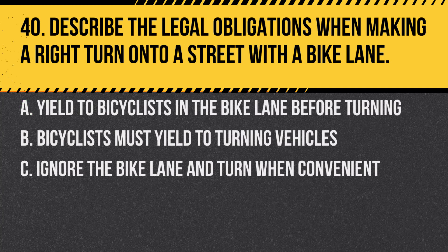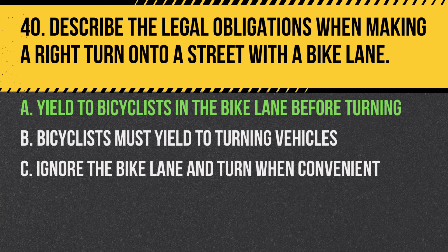Question 40. Describe the legal obligations when making a right turn onto a street with a bike lane. A. Yield to bicyclists in the bike lane before turning. B. Bicyclists must yield to turning vehicles. C. Ignore the bike lane and turn when convenient. Answer: A. Yield to bicyclists in the bike lane before turning. Drivers must ensure the bike lane is clear before making a right turn.